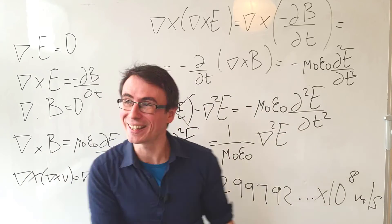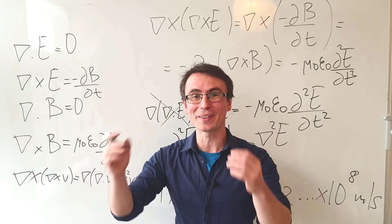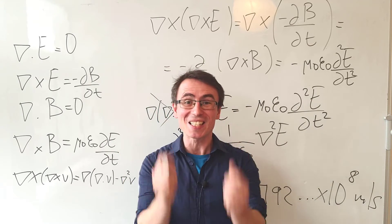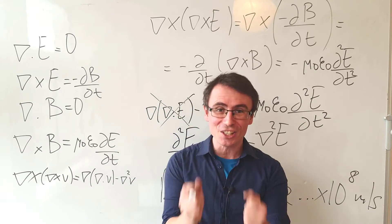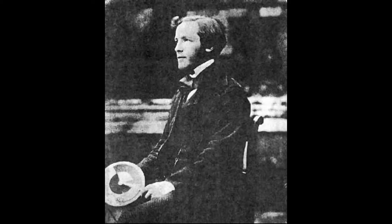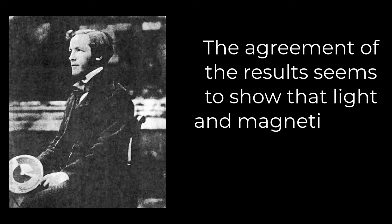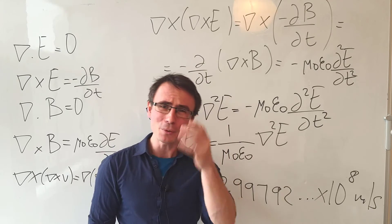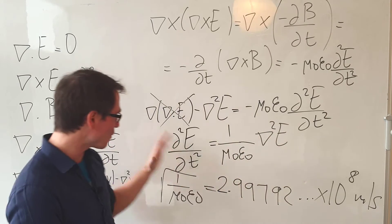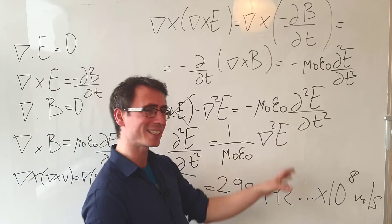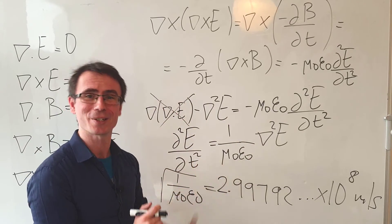When Maxwell discovered this, he immediately knew that electricity and light were a manifestation of the same phenomena. In fact, he commented, 'The agreement of the results seems to show that light and magnetism are affections of the same substance.' And in fact, the light through which you're watching this video is nothing but the propagating electromagnetic wave according to this equation.